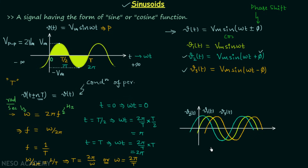When ωt equals zero, V1(t) is also zero. When ωt equals negative φ, V3(t) is zero. Comparing V2(t) and V3(t), the phase difference is equal to 2φ: V2(t) is leading V3(t) by 2φ and V3(t) is lagging V2(t) by 2φ.